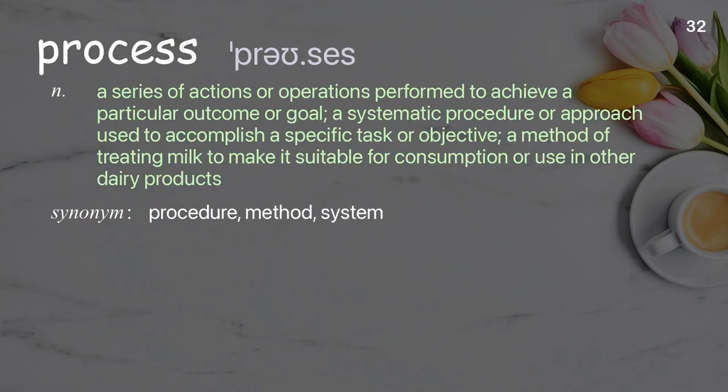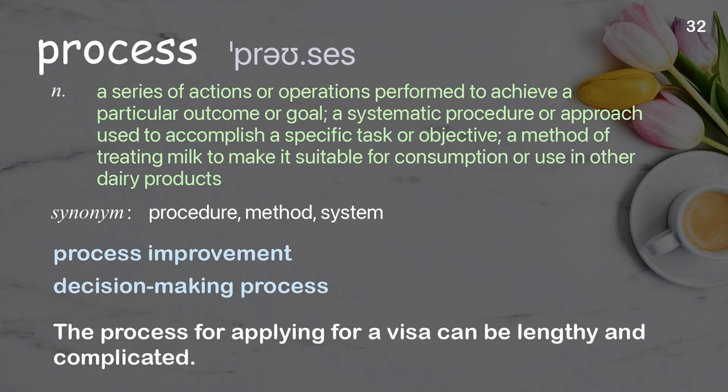Process. A series of actions or operations performed to achieve a particular outcome or goal; a systematic procedure or approach used to accomplish a specific task or objective. Examples: process improvement, decision making process. The process for applying for a visa can be lengthy and complicated.